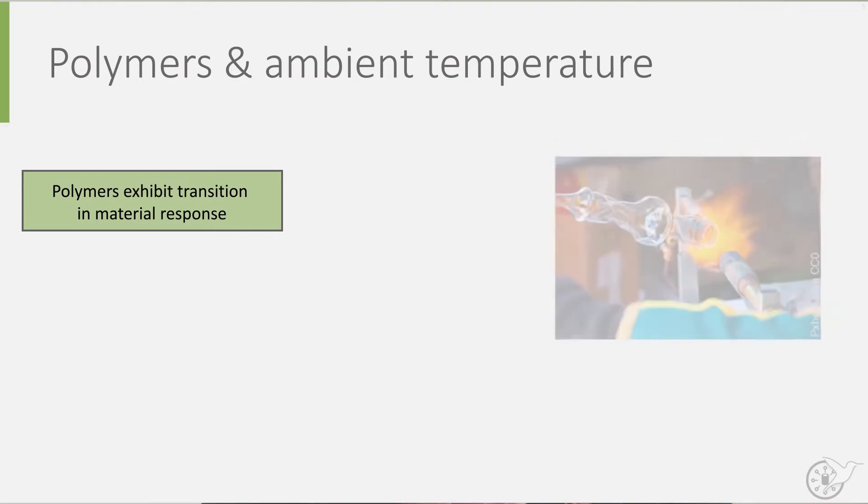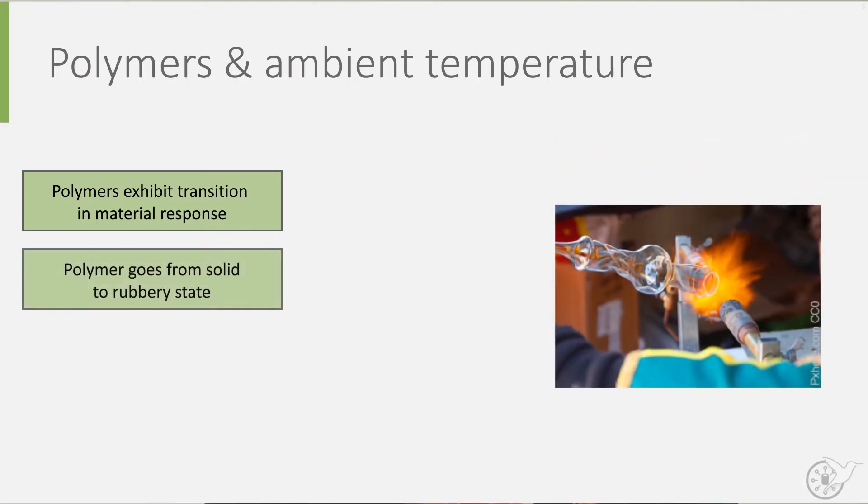Even though the temperature is not at its melting point, what happens is that a polymer goes from a solid state into a rubbery state. This transition point is called the glass transition temperature.